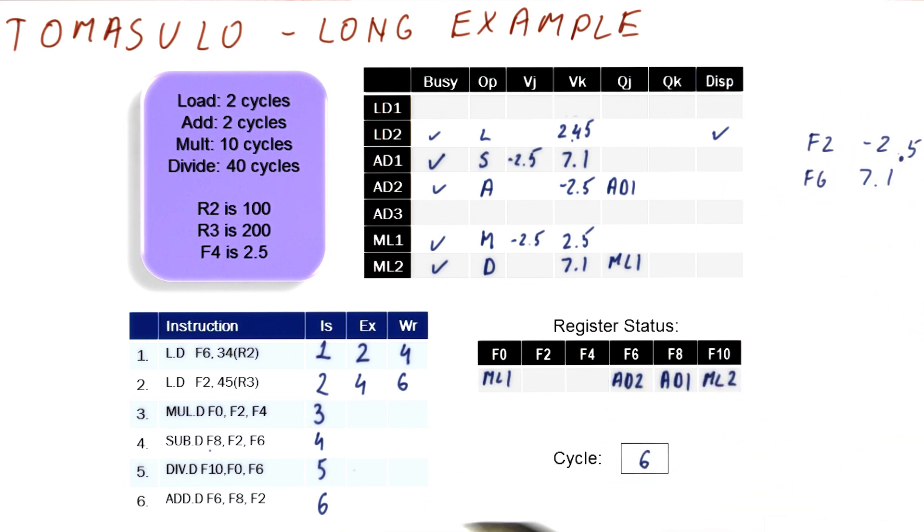So, in cycle six, we have issued an instruction, we have broadcast the result, and nothing really has been dispatched. So now it's time to consider what happens in cycle seven.